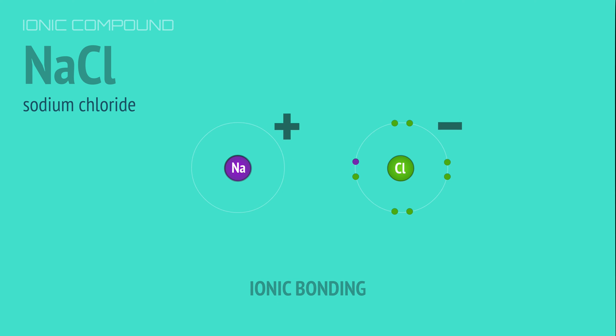As we saw, the transfer of an electron from sodium to chlorine creates the oppositely charged ions, and the electrostatic attraction of these ions is the ionic bond.